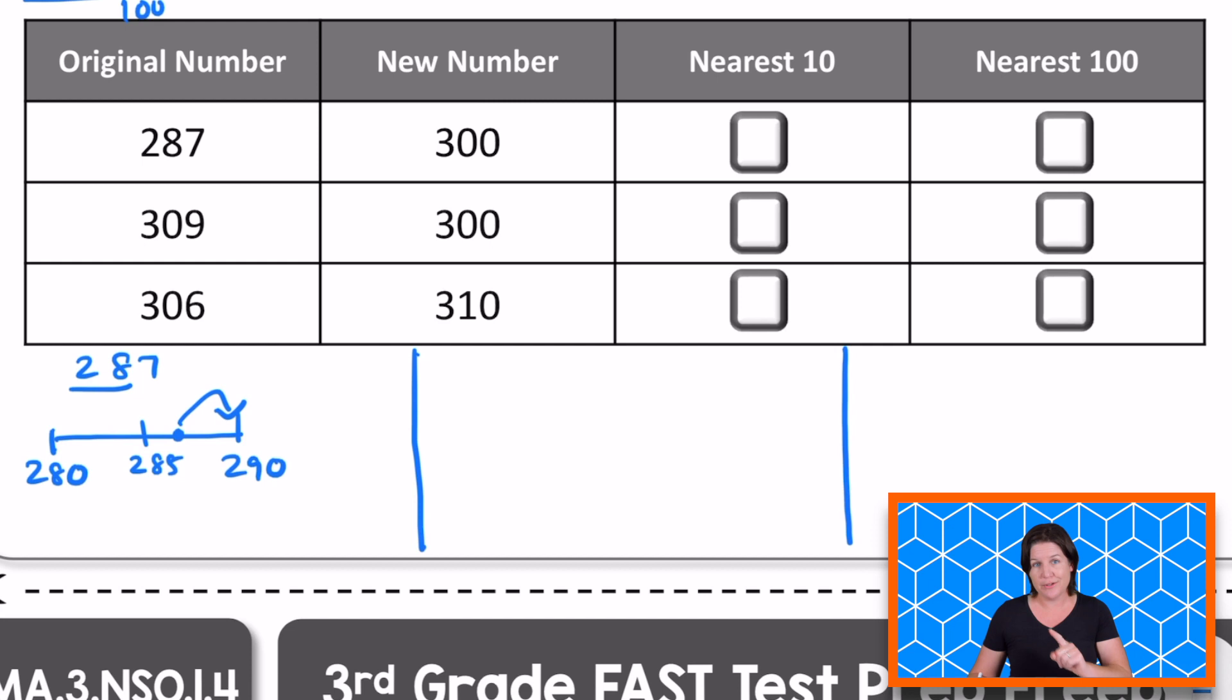But the new number is not 290. It is 300. So it's not to the nearest 10. It must be to the nearest 100. But let's make sure.